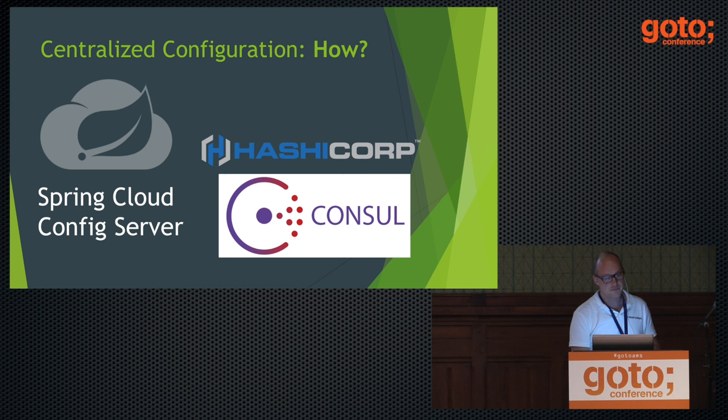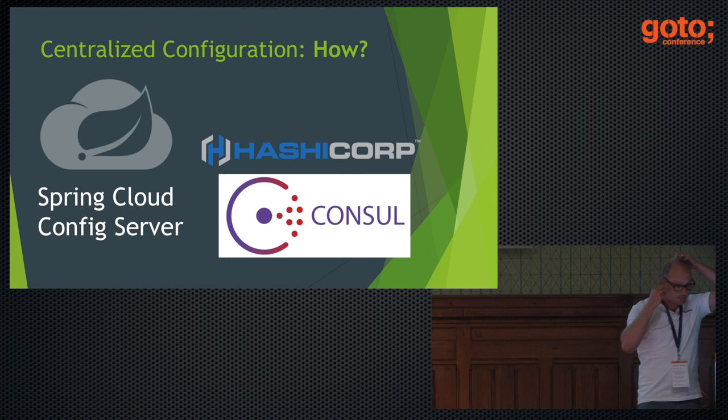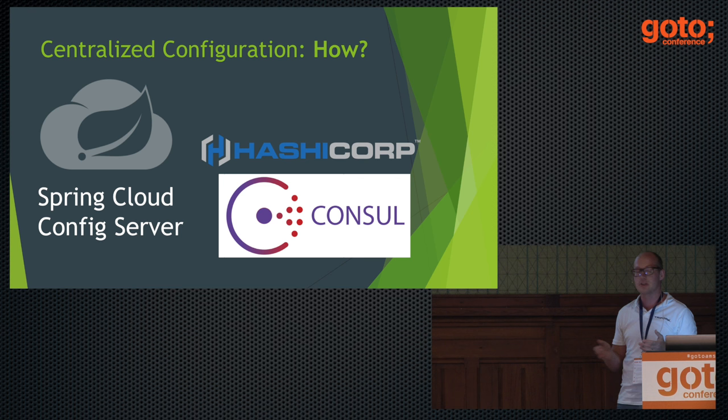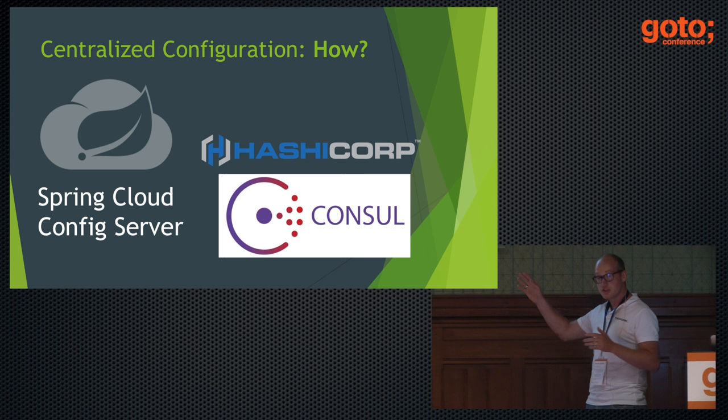There's one extra directory simply called 'application' for configuration that applies to all services. Under that you can see I have a key configured called 'logging.pattern.console' where I'm changing the default logging pattern used by Spring Boot for its console output. I've also changed the default log level for a service I'm about to start — you can do these sorts of things with Spring Boot quite easily.